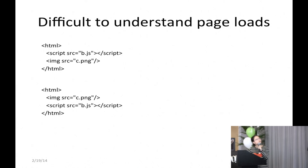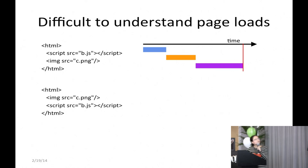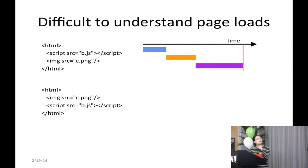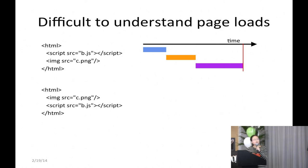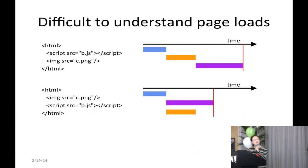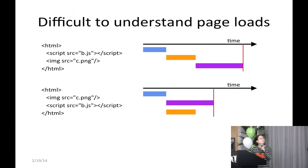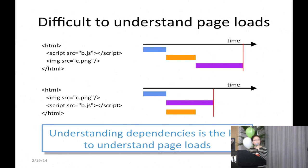Now we look at how much time it takes to load each page. For the first page, the blue bar is the time to load the HTML, the yellow bar the JavaScript, and the purple bar the image. Loading the image needs to wait until the JavaScript is loaded. However, for the second page, loading the JavaScript does not have to wait until the image is loaded — assuming preloading is not used. The result is that the second page is loaded faster. This example shows that understanding dependencies between different factors is the key to understanding page loads.